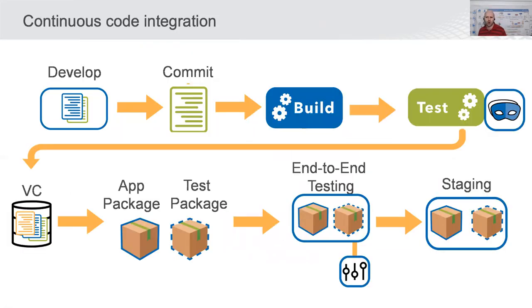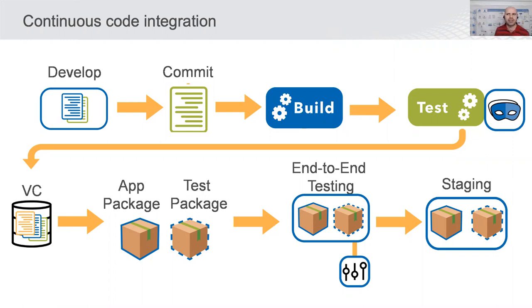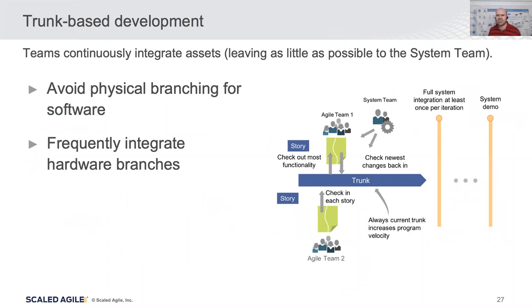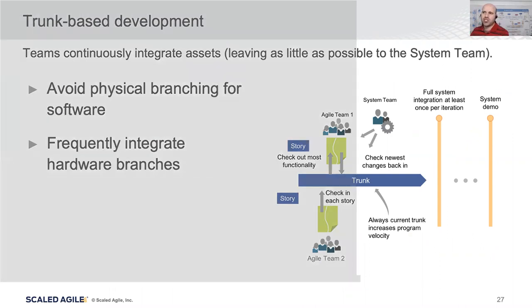Everyone is familiar with continuous code integration. To enable built-in quality, we want to build that continuous integration pipeline. When the developer commits code, the build is generated, automated tests run, version control updates, we prepare the app package, test it, and deploy to staging or production using feature flags to hide changes from production until stabilized. This is facilitated by avoiding physical branches and forcing teams to integrate with each other more.